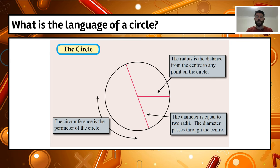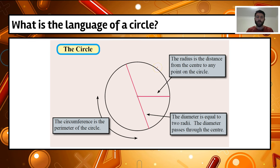If we have a look at our circle here, you can see there are four distinct parts. We've got this point in the centre, which we call the centre point. The distance from there out to the outer edge of the circle is called the radius — that's from the centre to any outer edge point. We've also got a line that goes from one side of the circle to the other, passing through the centre point, and this is called the diameter.